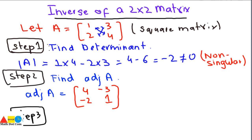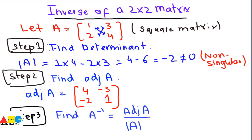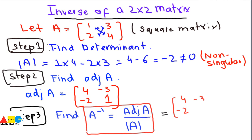Step 3: find A inverse. The formula is A inverse equals the adjoint of A divided by the determinant of A. This is a very important formula to keep in mind in order to find the inverse of a matrix. Substituting the values, we write the adjoint of A as the matrix: 4, minus 2, minus 3, and 1. The determinant of A was minus 2.